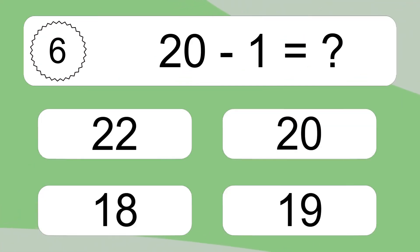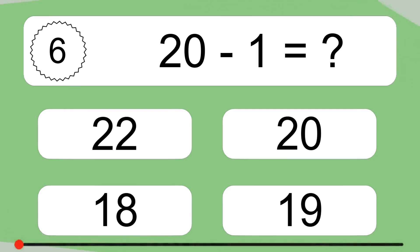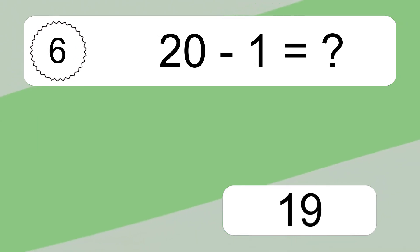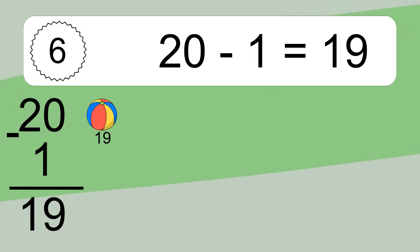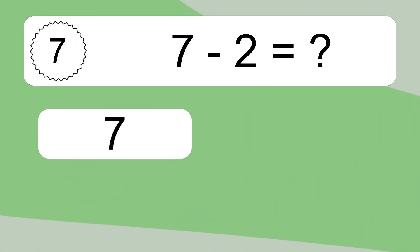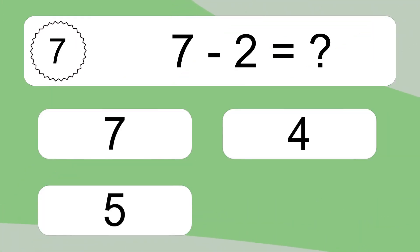20 minus 1 equals what? 20 minus 1 equals 19. Let's count it: 19. 7 minus 2 equals what?